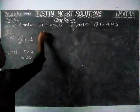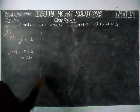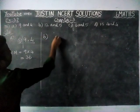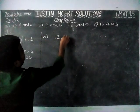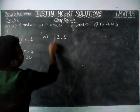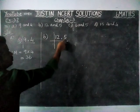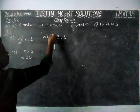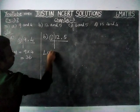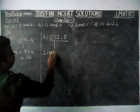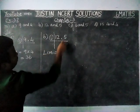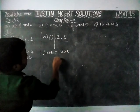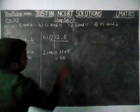Next, part B: 12 and 5. 12 and 5 also don't have any common factor other than 1. So, LCM of 12 and 5 is equal to 12 × 5 = 60.